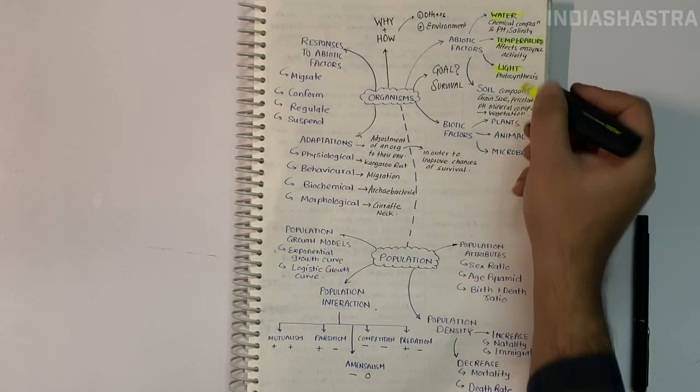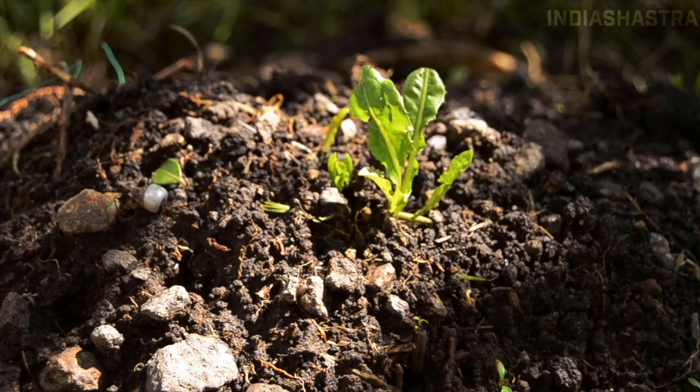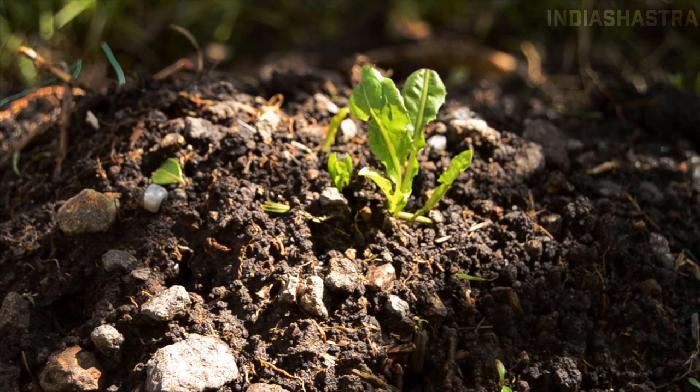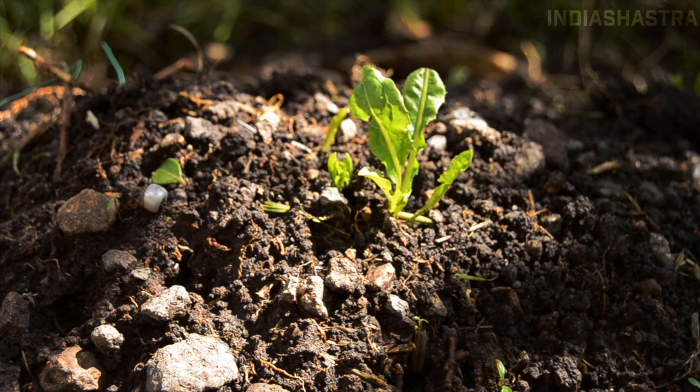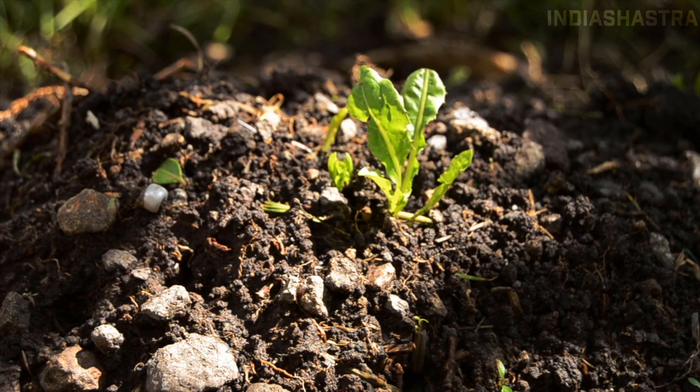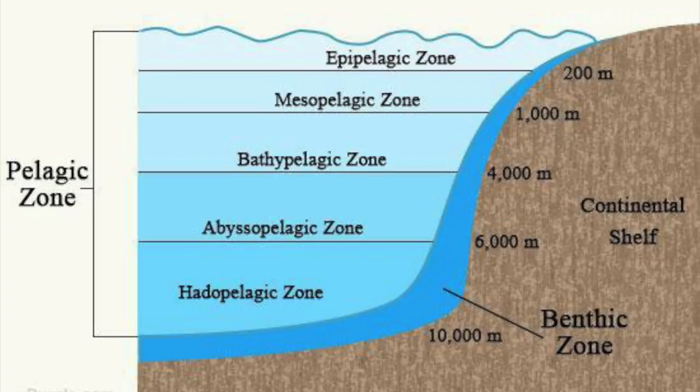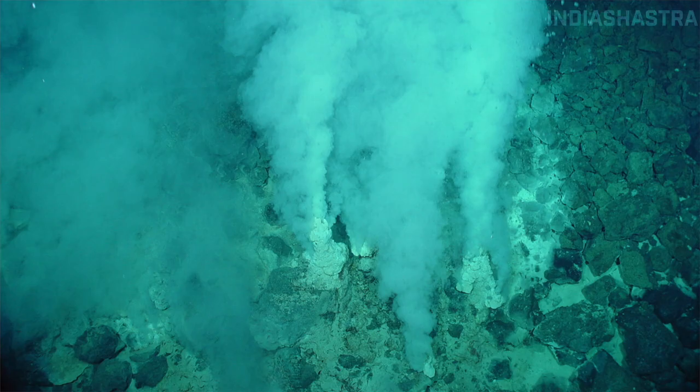Light is important since plants produce food through photosynthesis, which requires sunlight. Many small plants and shrubs in forests are adapted to photosynthesize under very low light because they're overshadowed by tall canopied trees. Many plants depend on sunlight for photoperiodic requirement for flowering. Deep in oceans, even in benthic areas, we find life.